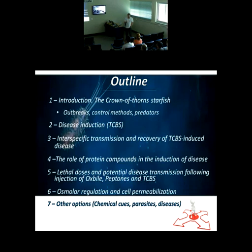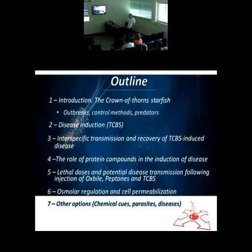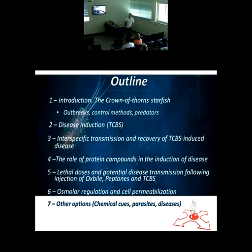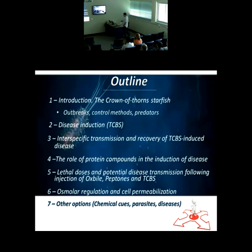One single starfish can produce up to 60 million eggs. There is a parasite that can feed on these gonads, and you can reduce the reproductive capacity of these animals. We're going to talk about that too.